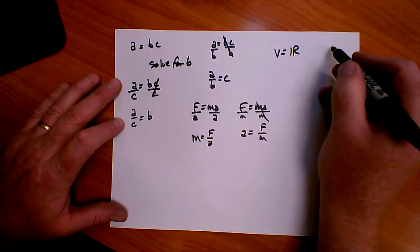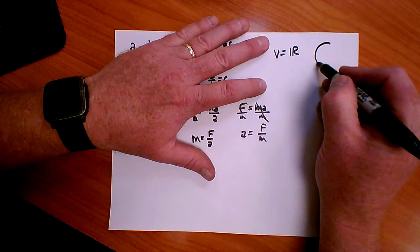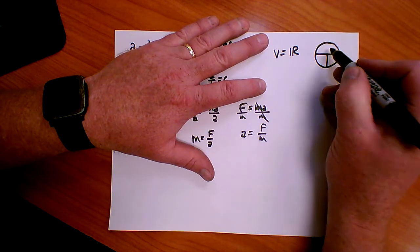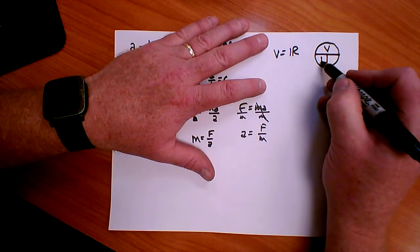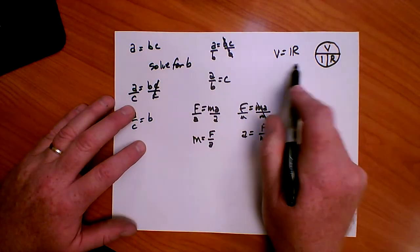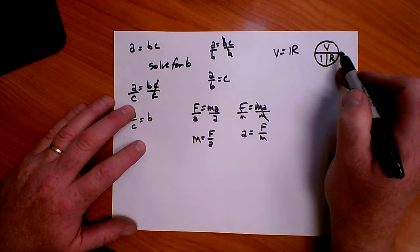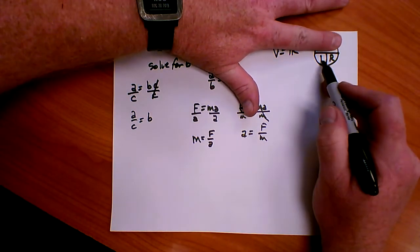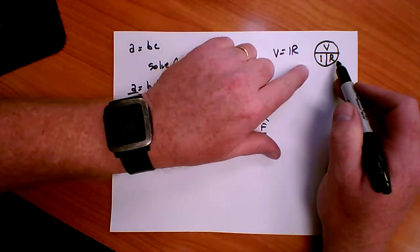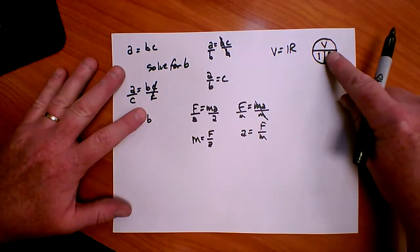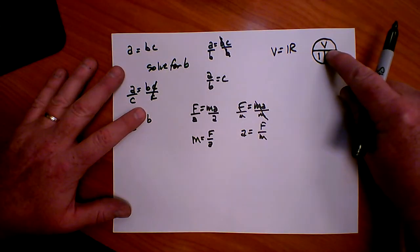And I've seen this once where they do a circle diagram. Something like this. And they put the V on top and the IR like so. So V equals IR. So in this circle diagram, if V equals IR, if I cover up the V, solve for V, V equals IR. If I solve for I, cover up the I, I equals V over R. Cover up the R, R equals V over I.